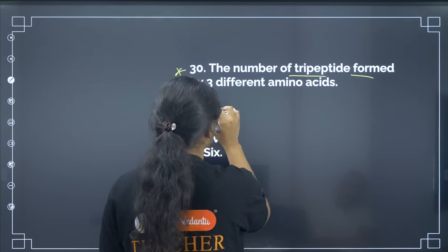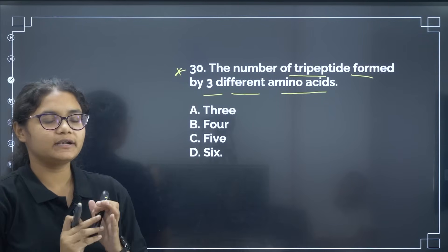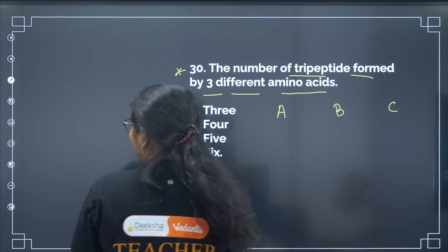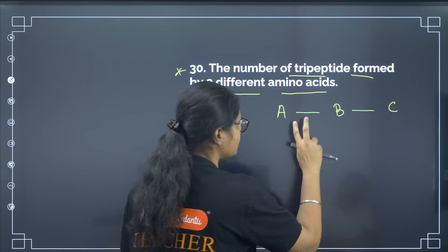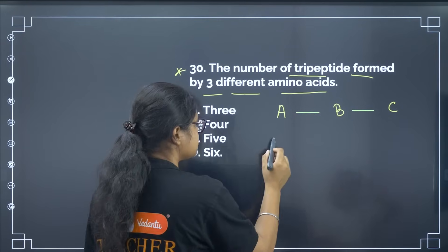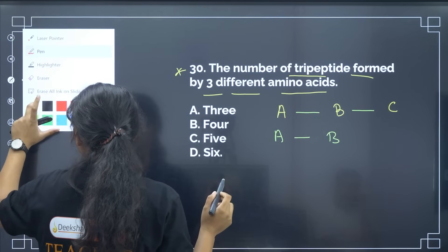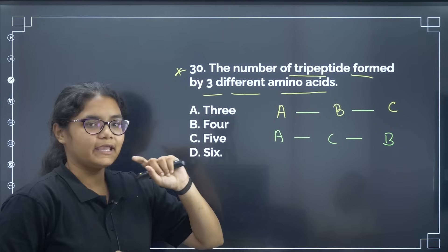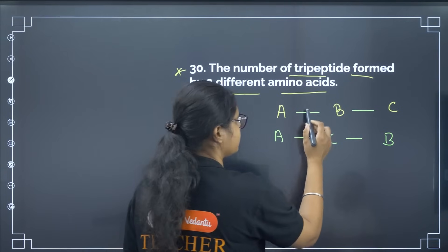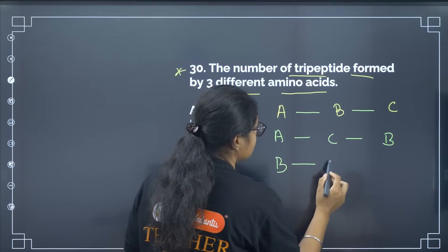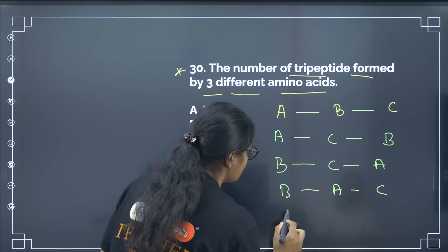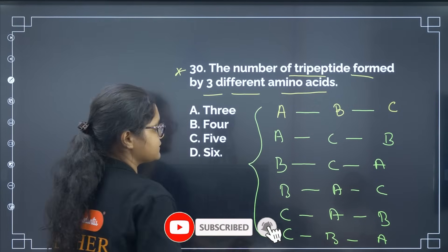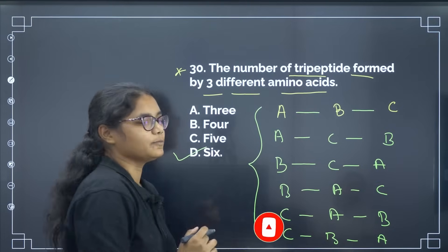What is the number of tripeptides that can be formed from three different amino acids? With three amino acids A, B, and C, we need to find all possible arrangements. Taking A first: A-B-C and A-C-B — two combinations. Taking B first: B-A-C and B-C-A — two more. Taking C first: C-A-B and C-B-A — two more. Total combinations are 6. The correct answer is option number D.